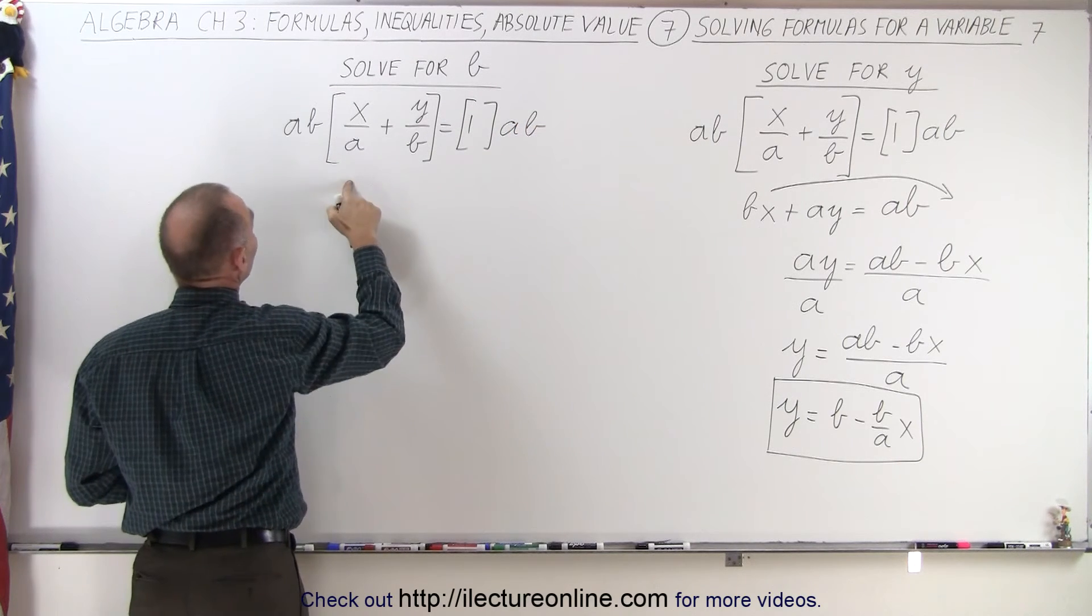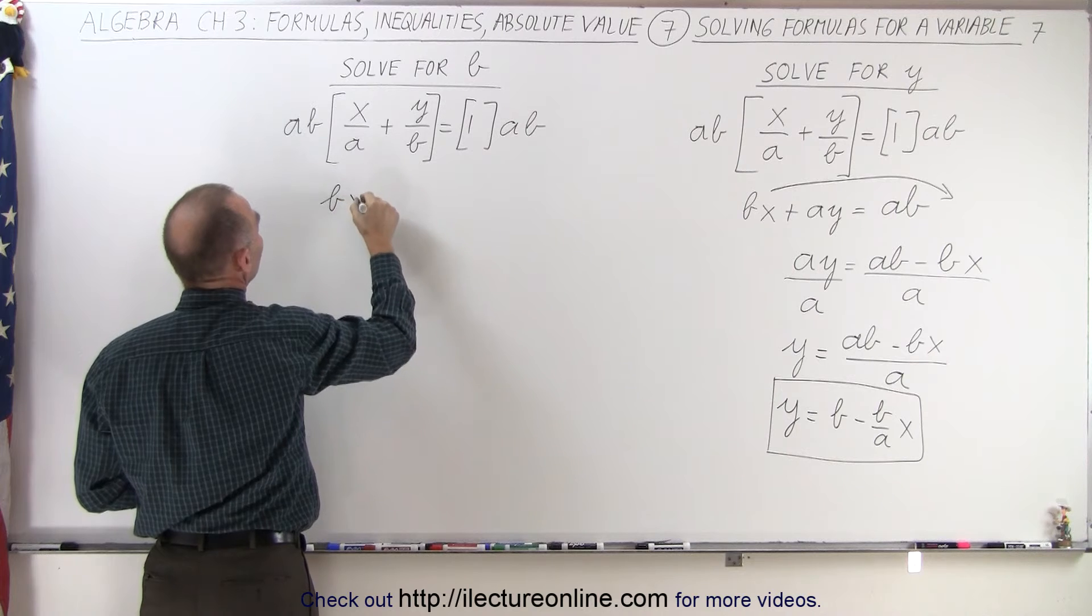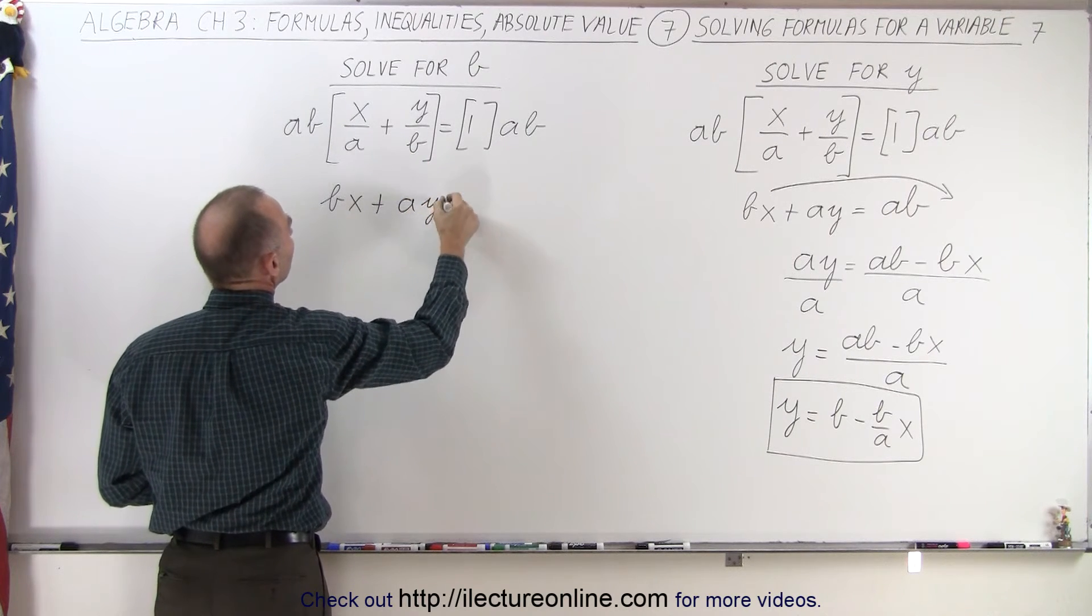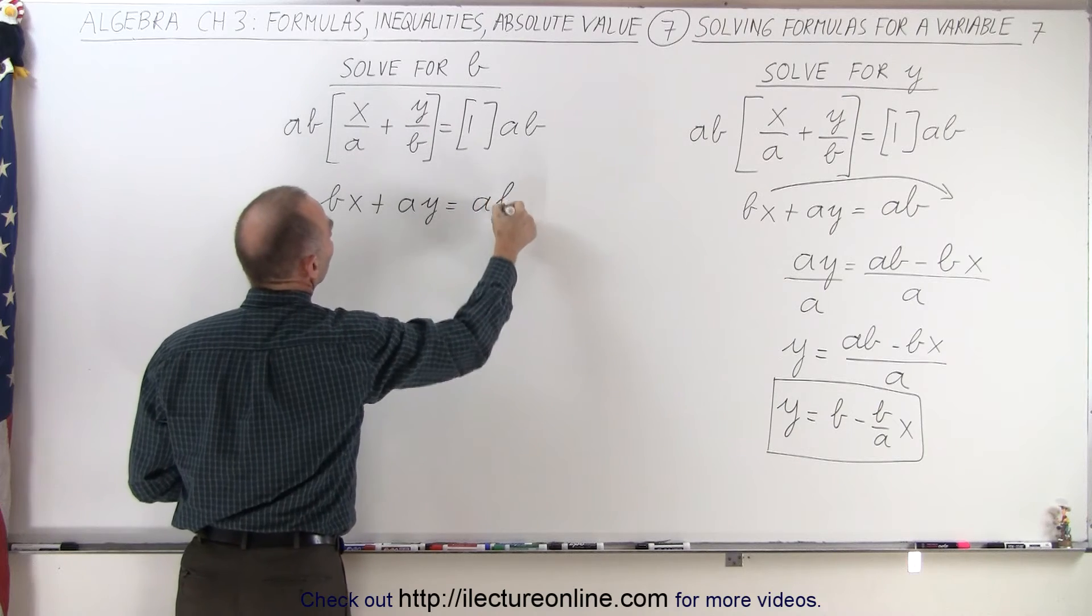Again on the left side, the a's cancel out on the first term. I end up with b times x plus, now the b's cancel out, a times y equals a times b.